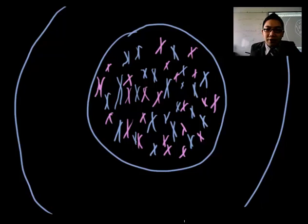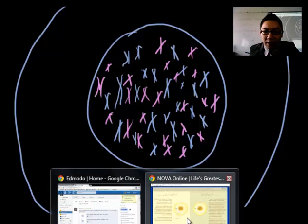Now, if this were a regular body cell undergoing mitosis, all of these would just line up in the center, and then the sister chromatids would split, and then we'd have the exact same number of chromosomes, which is 46. But in meiosis, something a little funkier happens. So, I'm going to switch over to a little animation here.